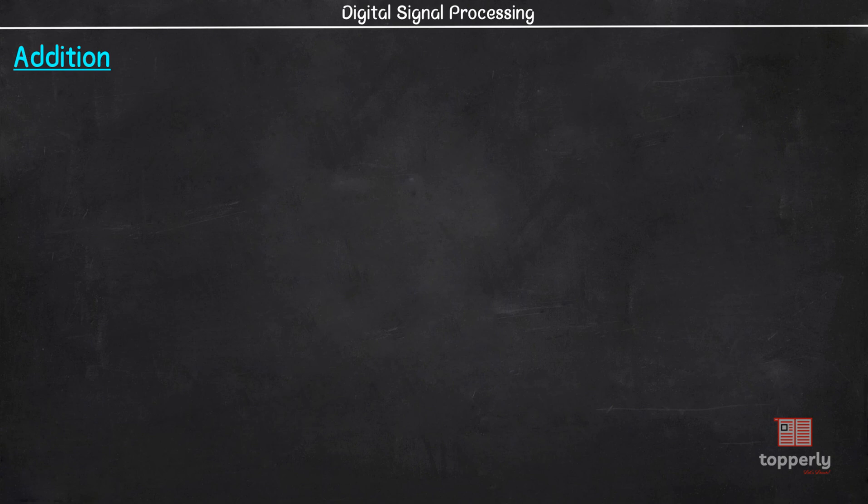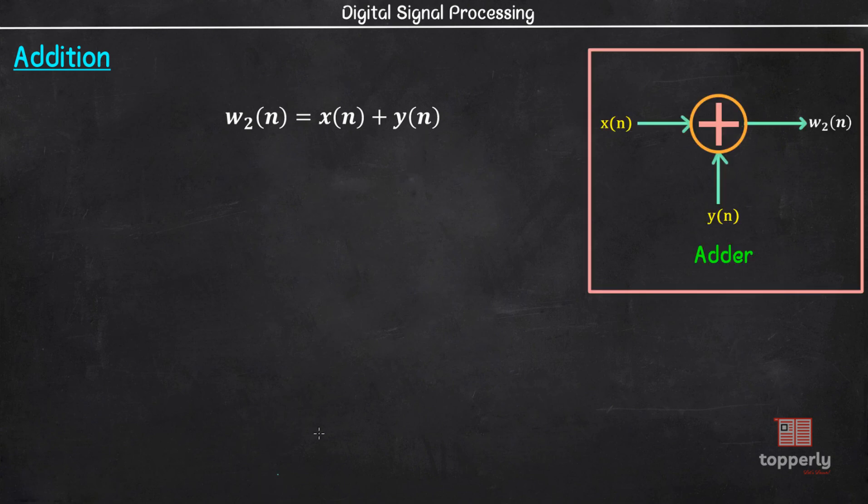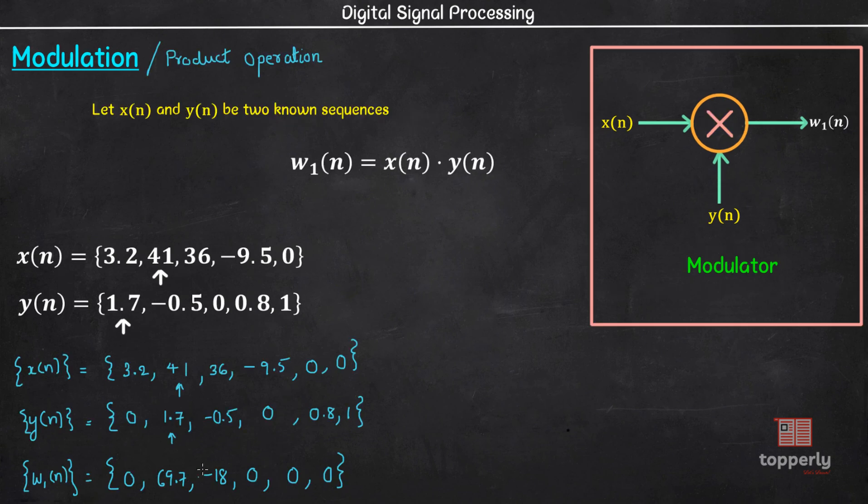Next, we have Addition operation. Here, the new sequence w2 is obtained by adding the sample values of the two sequences x and y. The device implementing the addition operation is called adder and its schematic representation is like this. Let us also see an example for Addition. Taking the same sequence of x and y from the previous example, we will need to modify the sequence in the same way as before.